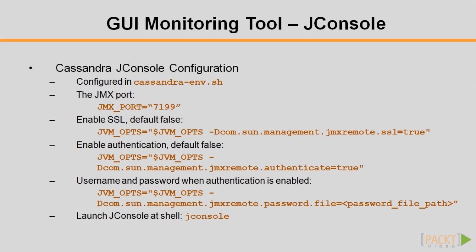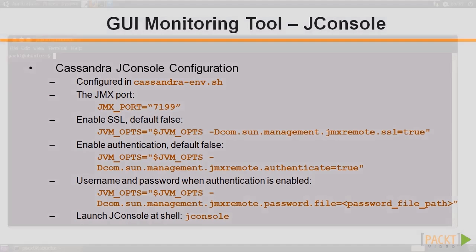JMX support is controlled through a few JVM options, which are configured in the central cassandra-env.sh. The default JMX port is 7199, and you may change it to another value at will. You may also enable Secure Socket Layer, SSL, or turn on authentication. Let's watch a demonstration.